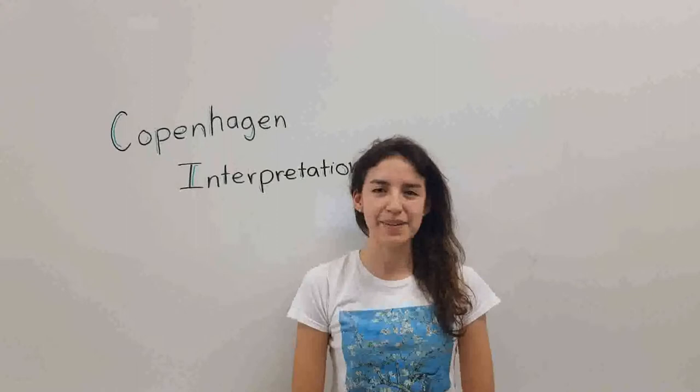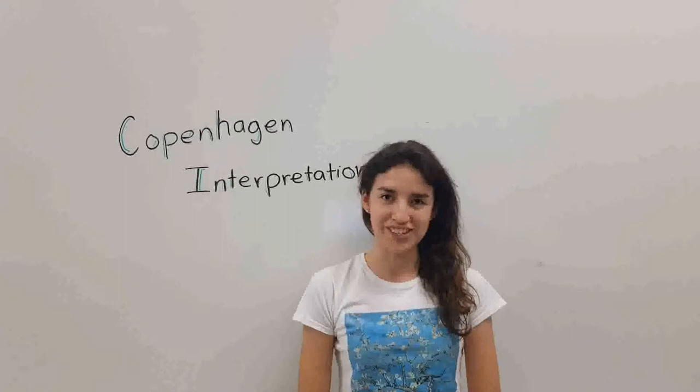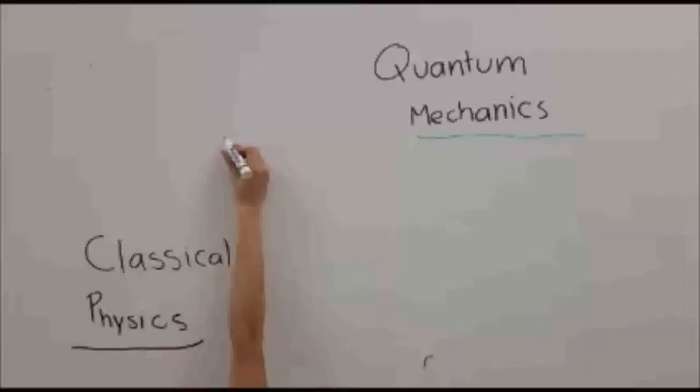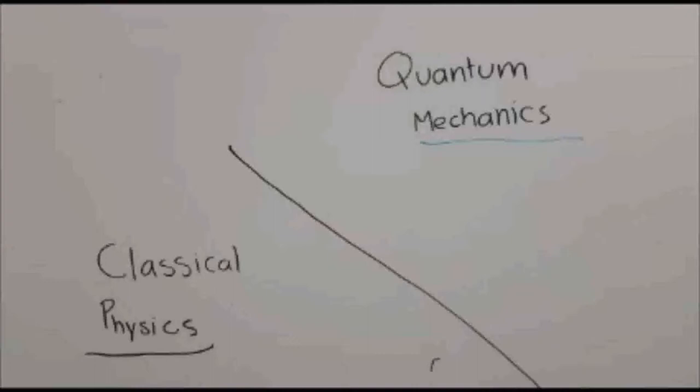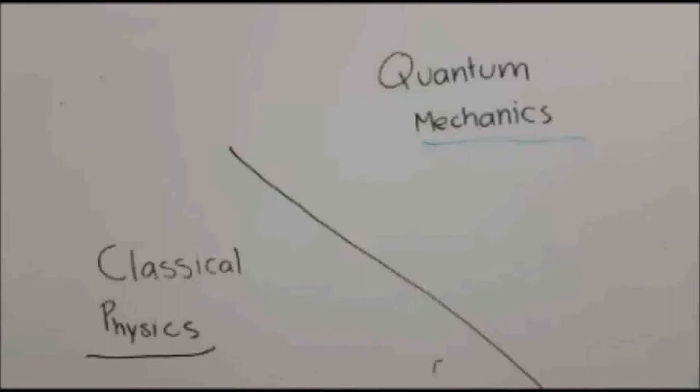Niels Bohr and his team at the Danish Institute of Technology developed the first quantum interpretation, hence the name Copenhagen Interpretation. The interpretation of Copenhagen is an approach very focused on the problem of measurement in quantum mechanics. This interpretation attempts to avoid the problem of measurement by establishing a strict separation between microscopic and macroscopic physics.